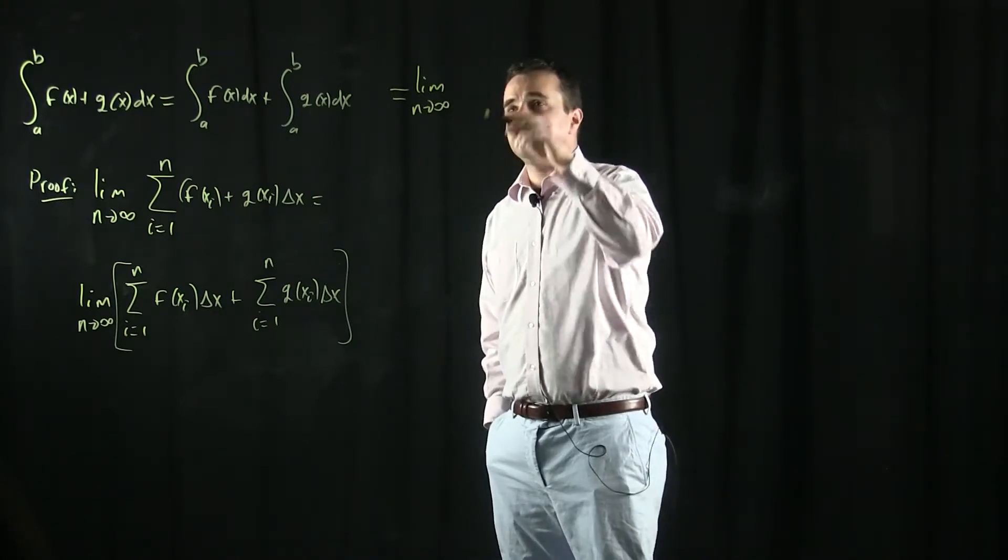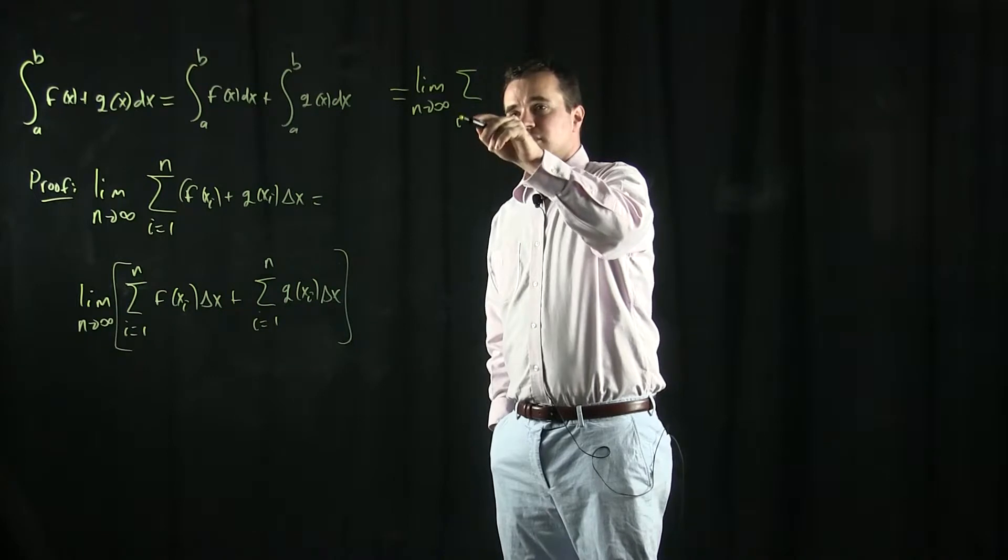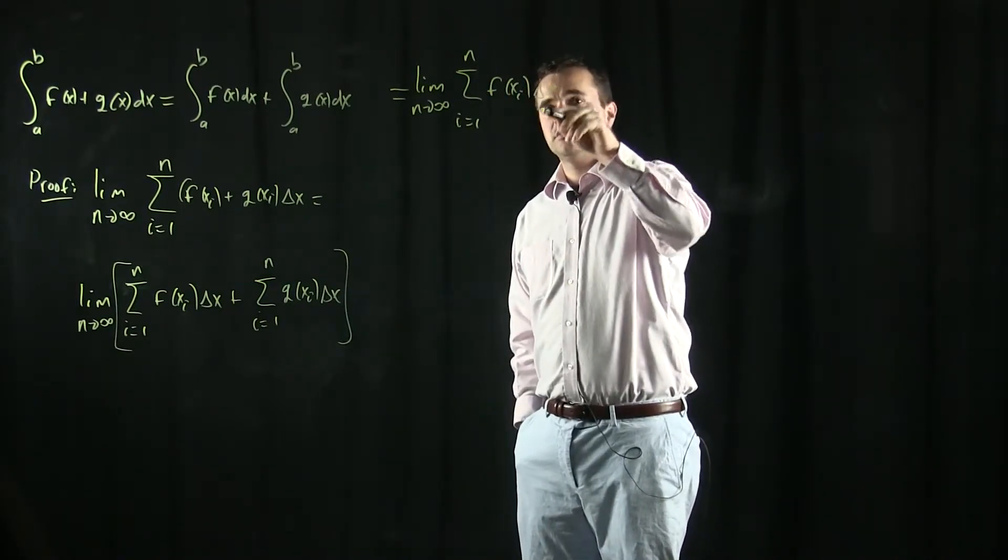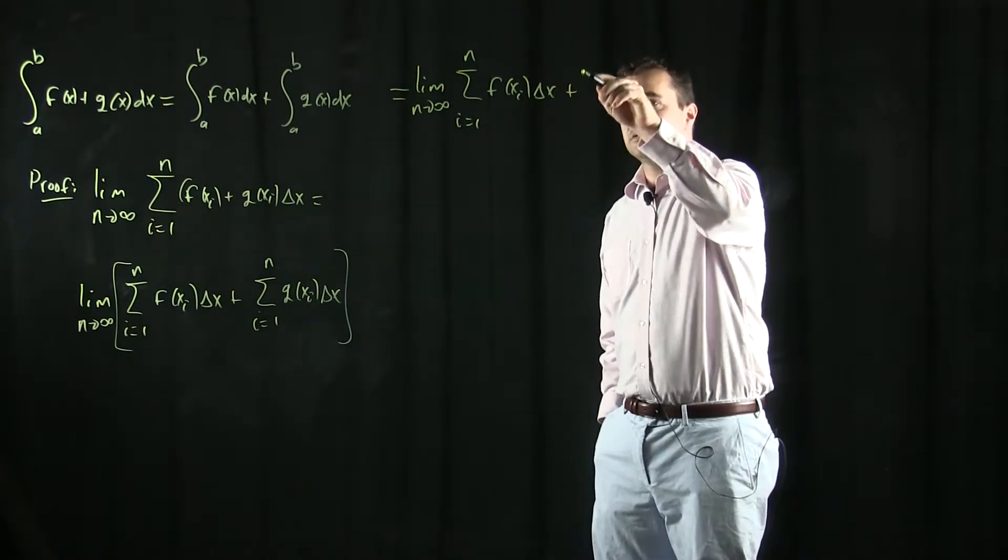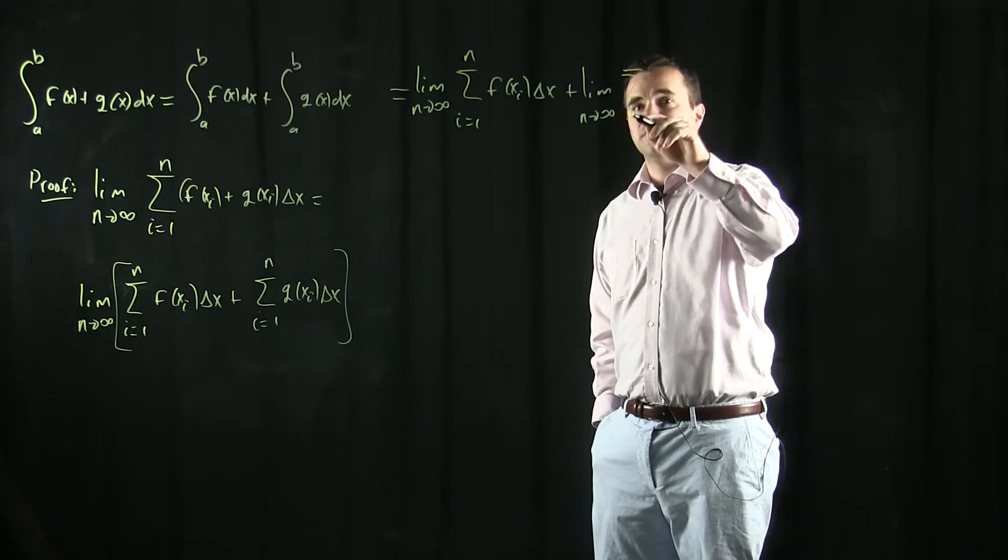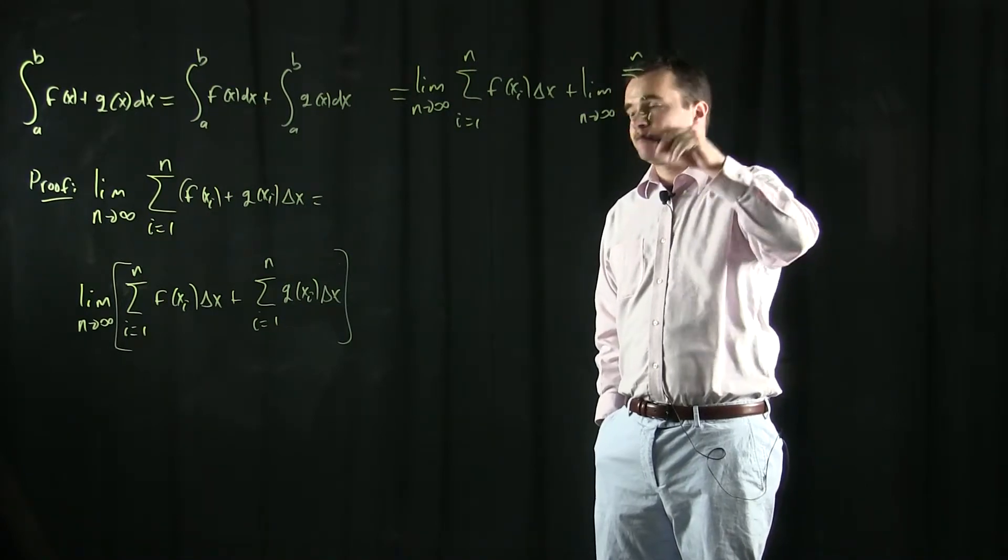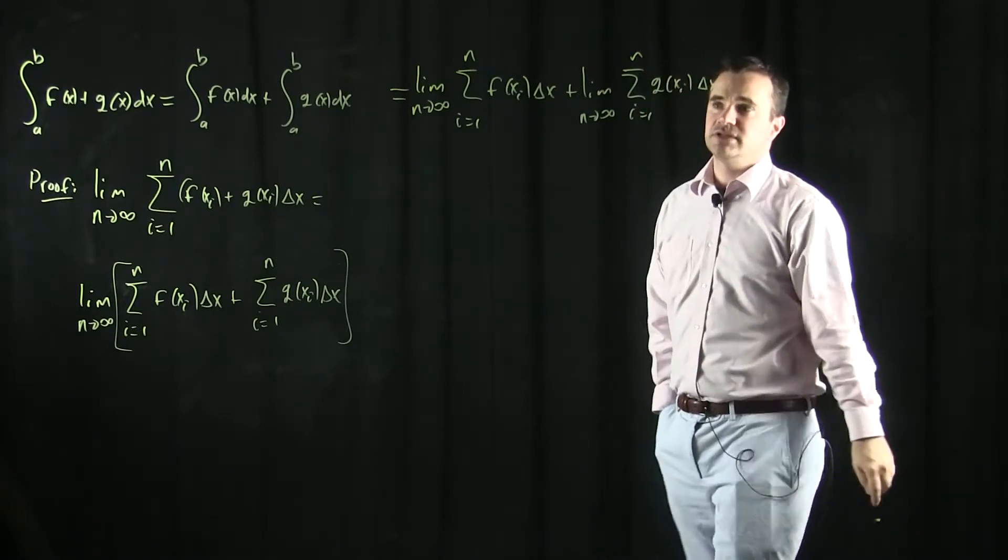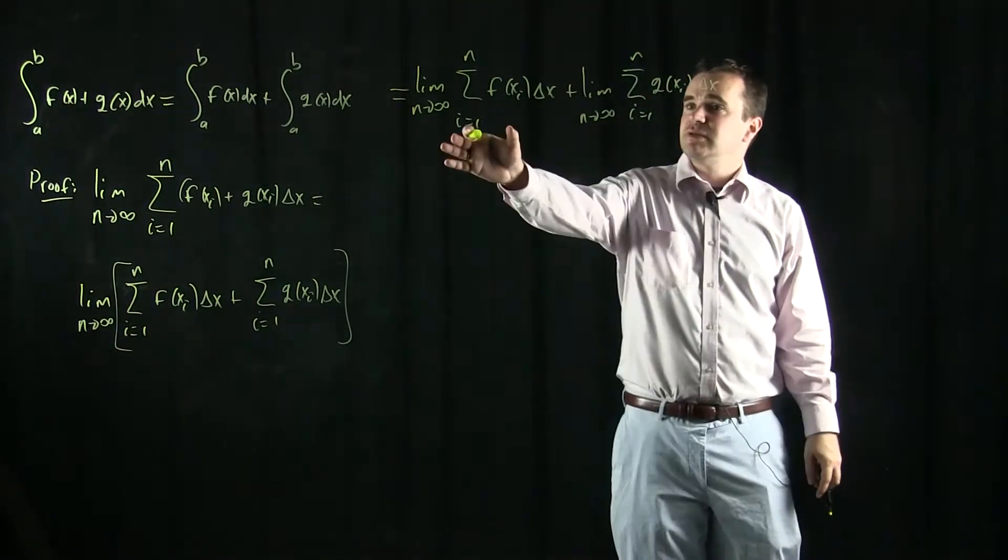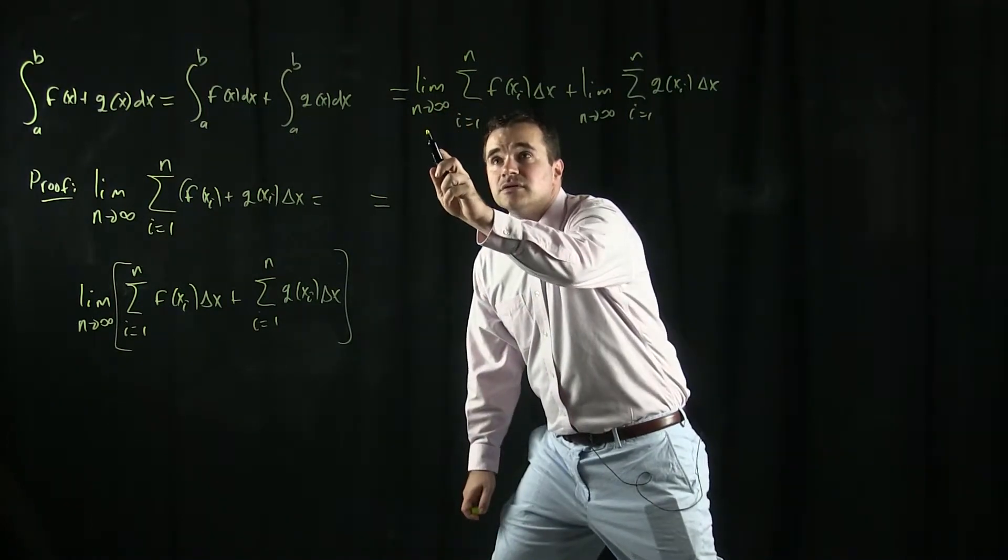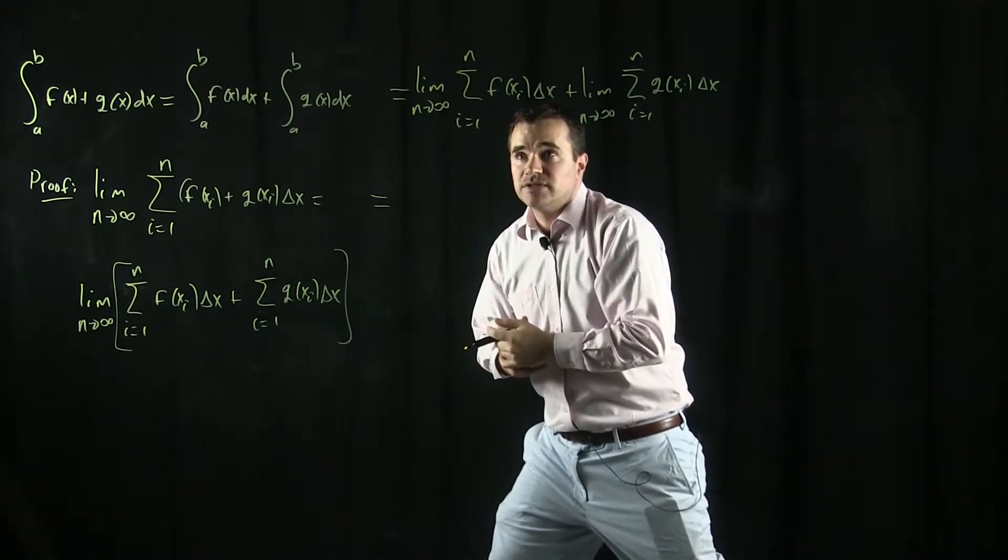So n goes to infinity of the sum f of xi times delta x plus limit n goes to infinity of the sum g of xi times delta x. And this is nothing but the definition of the definite integral using right-hand endpoints.